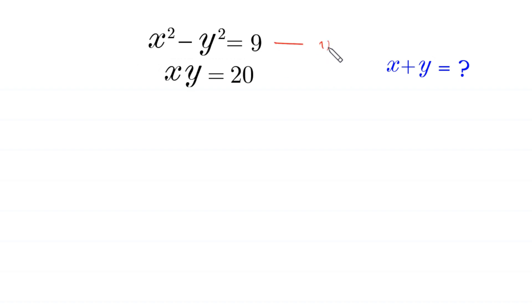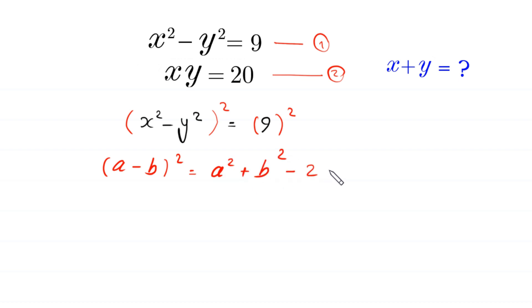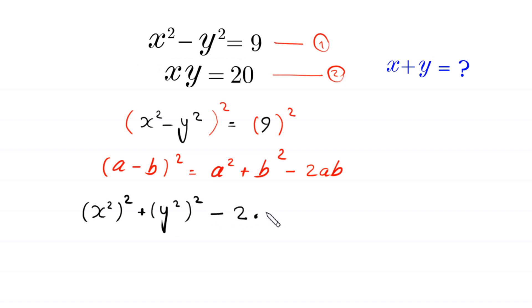Let us call this equation 1 and this equation 2, and square both sides of equation 1. Equation 1 is x squared minus y squared is equal to 9. We take the square of both sides. By using the algebraic identity, a minus b whole squared is equal to a squared plus b squared minus 2ab, this x squared minus y squared whole squared will become x squared whole squared plus y squared whole squared minus 2 times x squared times y squared, is equal to 9 squared, which is 81.